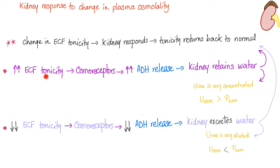If you have increased tonicity, osmoreceptors in your hypothalamus will sense the change and release ADH. The kidney retains water, and tonicity returns back to normal. The urine is very concentrated thanks to ADH — urine osmolality is higher than plasma osmolality. Normal plasma osmolality is about 290, while urine osmolality might be around 400–500.